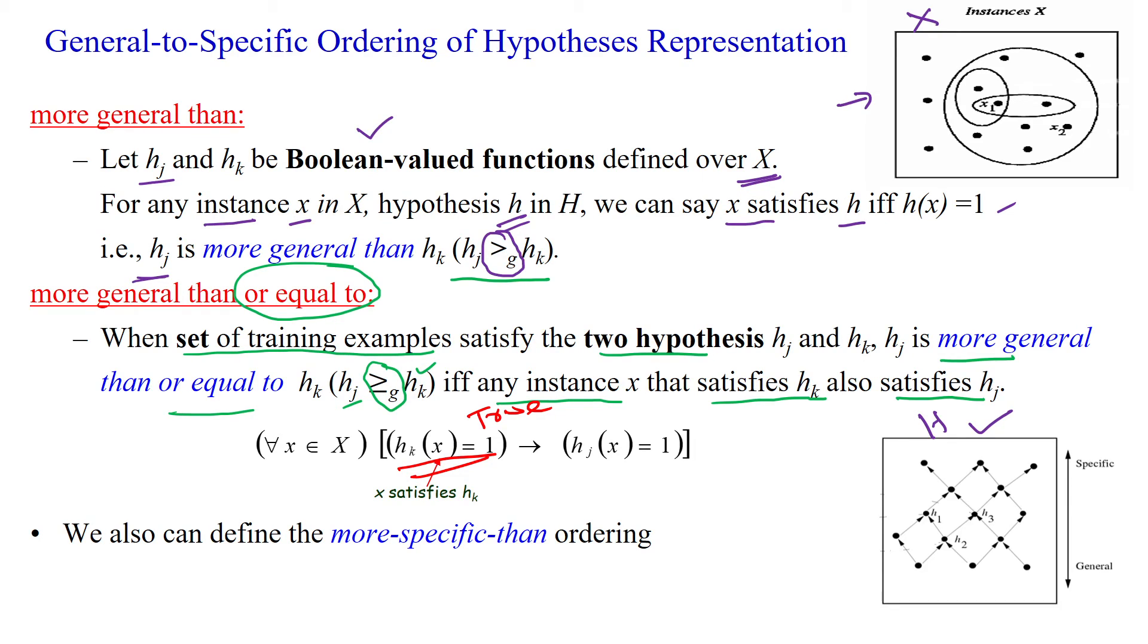So both hypotheses are satisfying the target concept c of x over all training examples. So this is the way to specify the hypothesis representation for general to specific ordering. Thanks for watching.